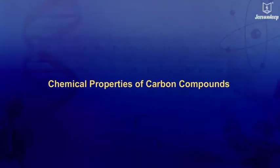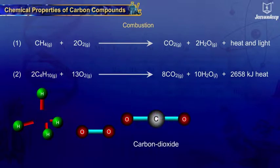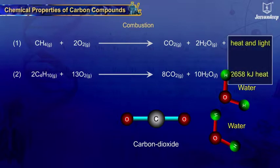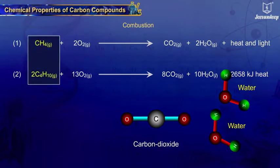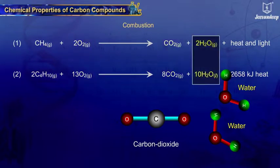Chemical Properties of Carbon Compounds — Combustion. All hydrocarbons get completely oxidized to give carbon dioxide and water when burnt in the presence of air or oxygen. This reaction is exothermic as a large amount of heat is liberated. For example, methane and butane burn in the presence of air to give carbon dioxide and water, liberating a large amount of heat.